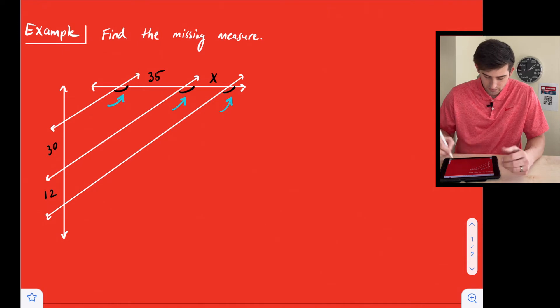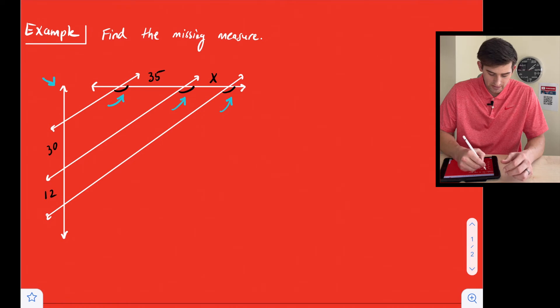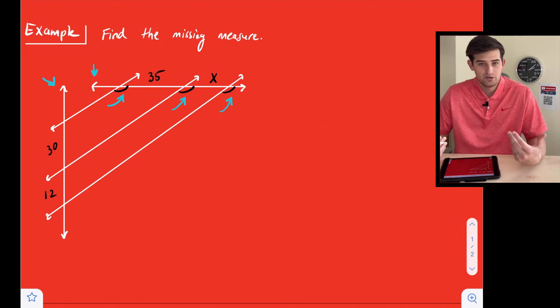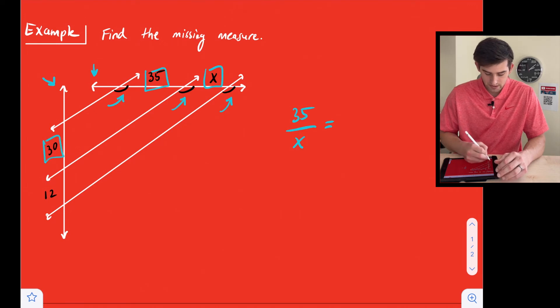So these three diagonal lines that we see, those are our parallel lines. And so this vertical line and this horizontal line, those would be considered our transversals. So we see we have 35 and X. So we could set up a ratio there. 35 over X is equal to, and now we want to say 30 over 12.